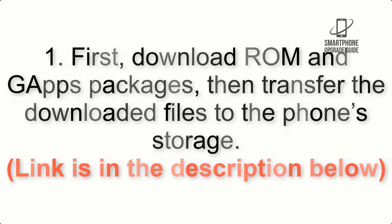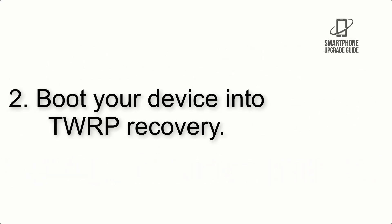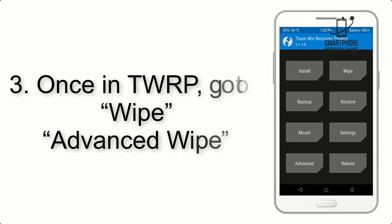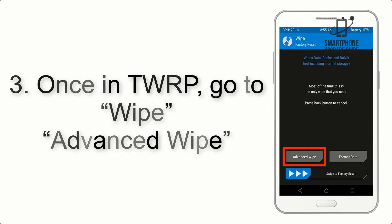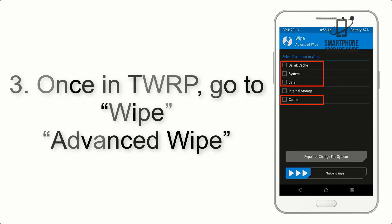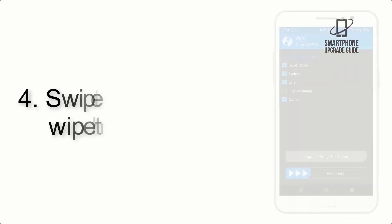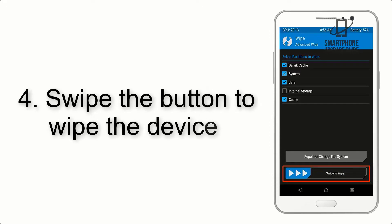Step 2: Boot your device into TWRP recovery. Once in TWRP, click on Advanced Wipe and select the checkboxes as shown in the image, excluding internal storage.